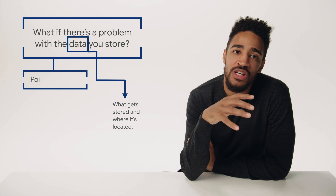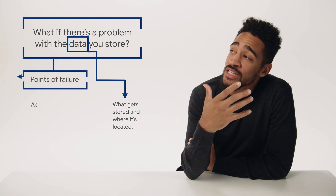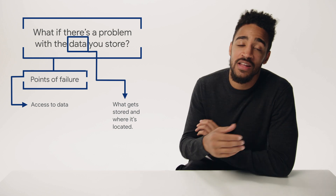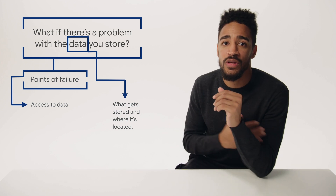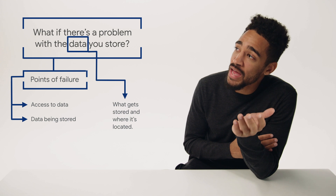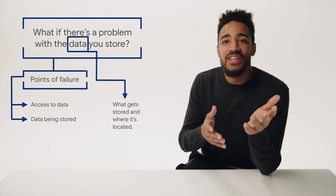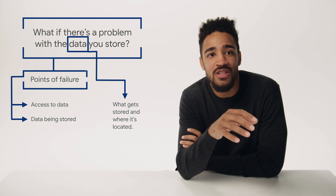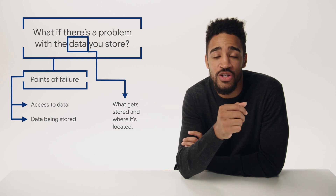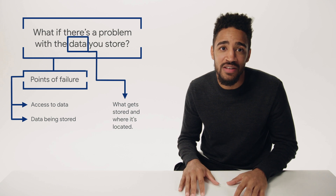Typical concerns include something bad with the people who can access machines — for example, a compromised employee accessing data they shouldn't. Something bad with the data itself, like receiving bad data or storing illegal data. If the data coming into your system is junk, then even if every other component of data security is working as normal, the system still won't function as intended.